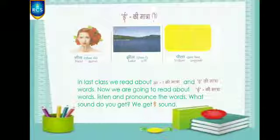Listen and pronounce the word. What sound do you get? Listen to the word. Listen to the first letter. What pronunciation do you get? Eee. So, this is E key matra word.